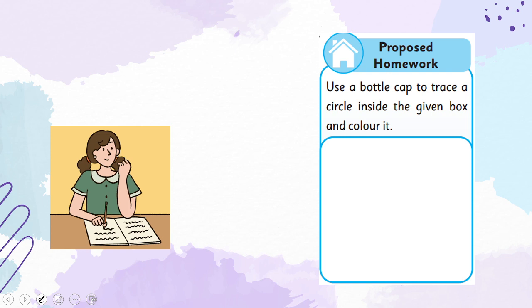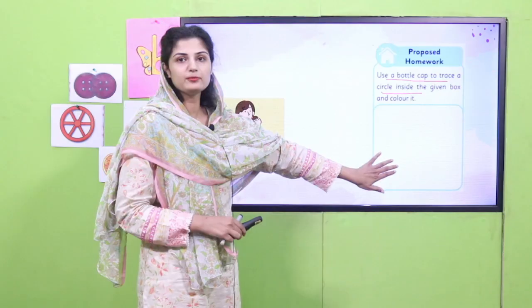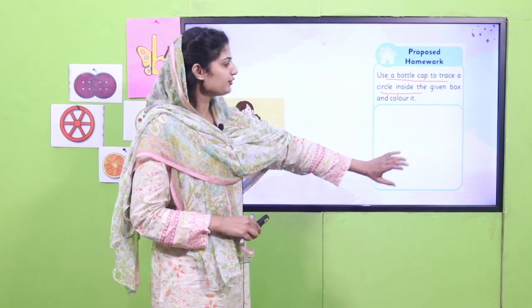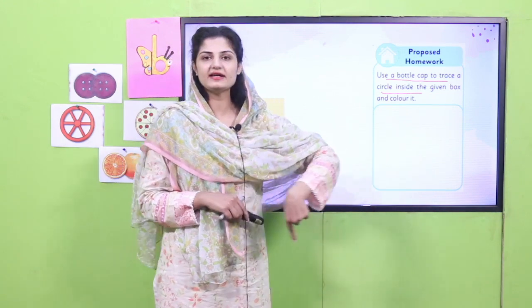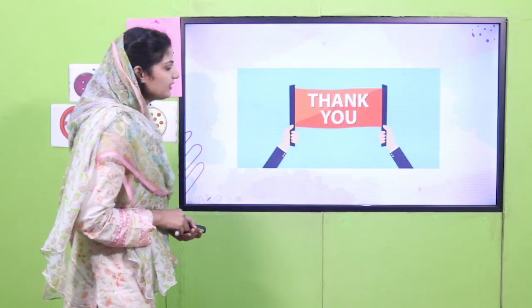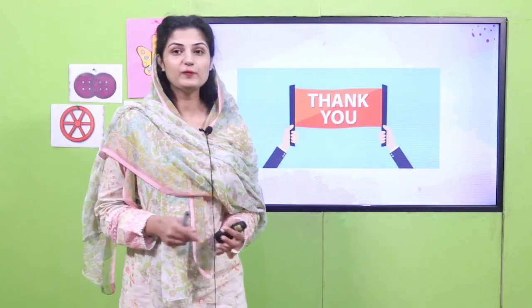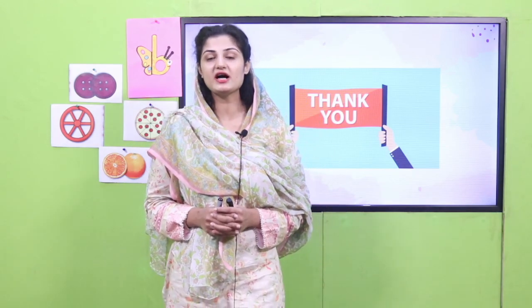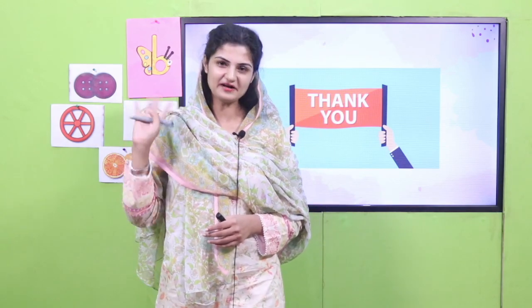Now it's time for your homework. You're going to use a bottle cap to trace a circle inside the given box in your book. Place the bottle cap — any bottle cap — on it and trace the circle. With that, our lesson has come to an end. Hopefully you have enjoyed all the lessons of circle. I'll catch you in the next lesson. Till then, Allah hafiz.